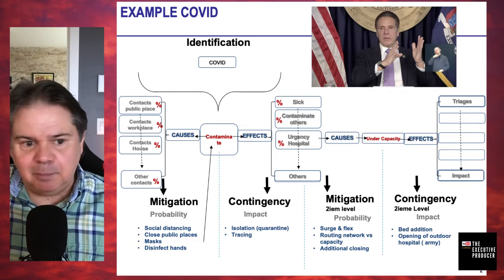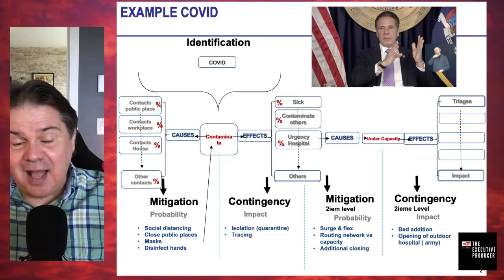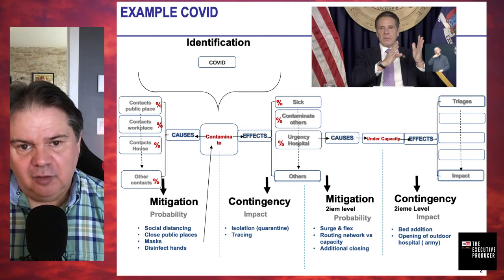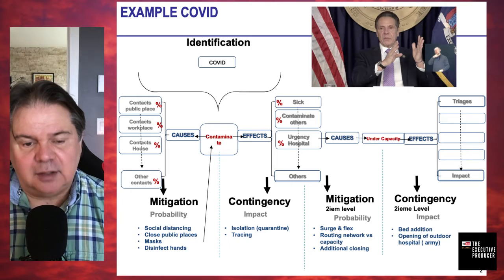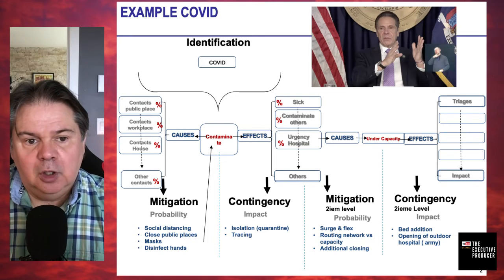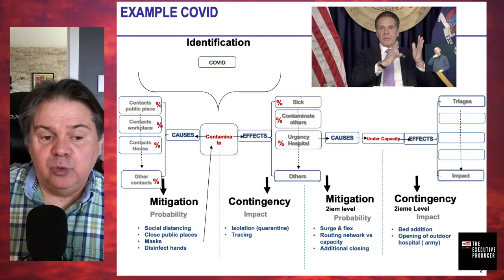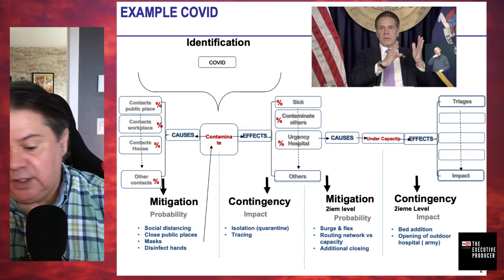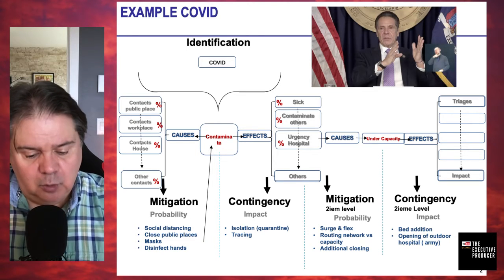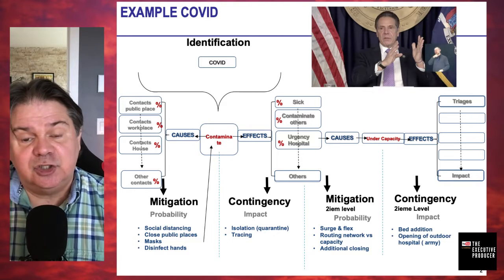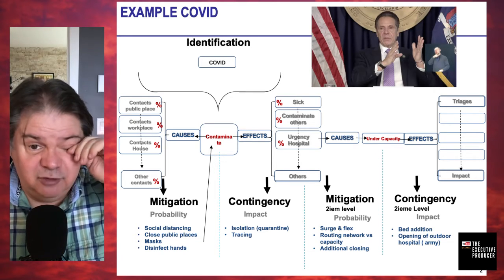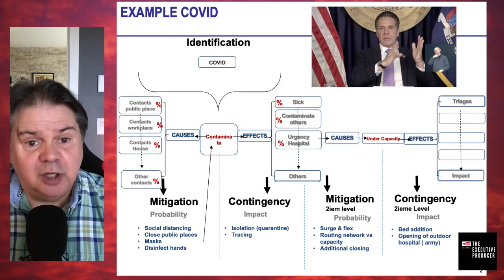Potential causes of contamination: contact in public places, at the workplace, at home — anywhere you have contact is a chance to be contaminated. To minimize the probability you'll recognize these measures: social distancing, closing public places, working from home, wearing masks, disinfecting your hands. All of these tackle the probability of contact leading to contamination. The goal is to lower the residual. But even after all of that — here in Canada, in late April, we're in very tight lockdown and we still have new cases every day.